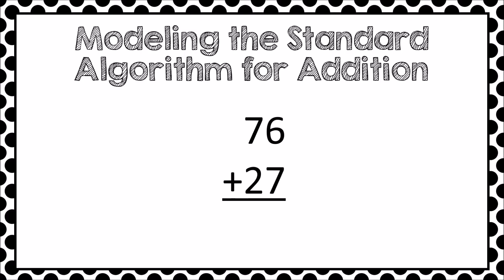We have spent most of this session talking about the standard algorithm for subtraction. When talking about addition, you need to be just as cautious with your language. For example, when adding 76 plus 27, say something like: '6 plus 7 is 13, so I will record the 10 in the tens place and the 3 ones in the ones place. 7 tens plus 2 tens is 9 tens. One more ten? Well, that's 10 tens or 100. I'll record the 1 for 100 in the hundreds place, and I don't have any tens, so I'm going to record a zero here. 76 plus 27 is 103.'